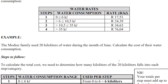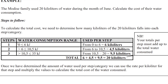To calculate the cost, we need to determine how many of the 20 kilolitres fall into each category. Step one: from zero to six, that's six kilolitres charged at the first rate. From six to 10.5, that's another 4.5 kilolitres. From 10.5 to 35 kilolitres, that accounts for another 9.5 kilolitres. Your totals per step must add up to the total water consumed — in this case, 20 kilolitres.